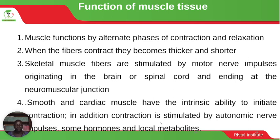The function of muscle tissue is alternating phases of contraction and relaxation. When the fibers contract they become thicker and shorter. Skeletal muscle fibers are stimulated by motor nerve impulses originating in the brain or spinal cord and ending at the neuromuscular junction. Smooth and cardiac muscle have the intrinsic ability to initiate contraction, additionally stimulated by autonomic nerve impulses, some hormones and local metabolites.